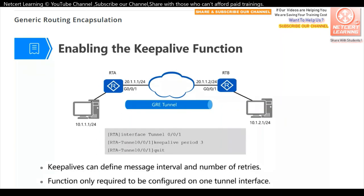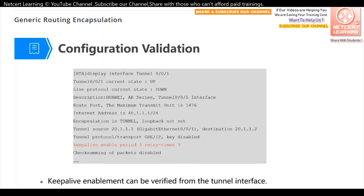We can also enable the keepalive function. In the tunnel interface, configure the keepalive period to 3 seconds — by default it is 5 seconds. We can also modify the keepalive retry times; by default this is 3 times. After configuration, using display interface tunnel 0/0/1, we can see keepalive is enabled with a period of 3 seconds and retry times of 3. This means after 9 seconds without receiving a keepalive packet from the remote side, the GRE tunnel will be considered down.